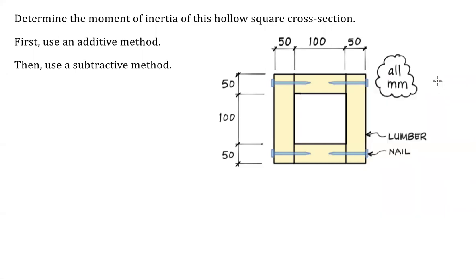Greetings. This is a video all about the moment of inertia. We have a hollow square cross section. Someone has built this out of four pieces of lumber and they have nailed it together as shown. Nails are a little bit oversized in case you feel like those don't look quite realistic and might split the wood.